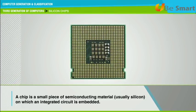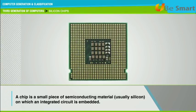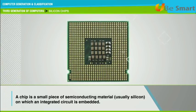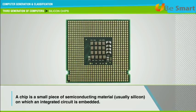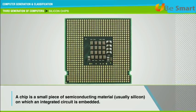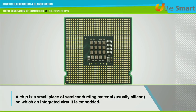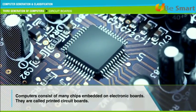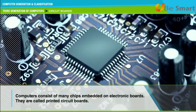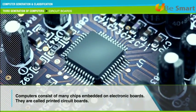A chip is a piece of semiconductor material, usually silicon. A typical chip is less than one quarter square inch and can contain millions of electronic components called transistors. Computers consist of many chips placed on electronic boards called printed circuit boards.